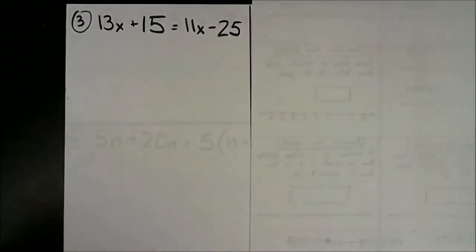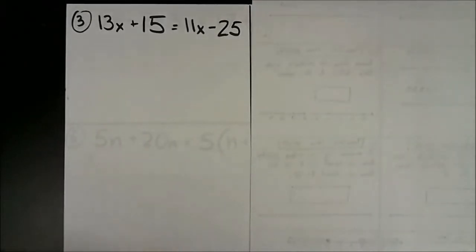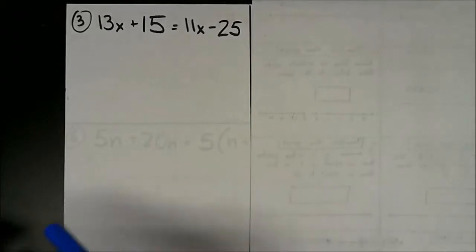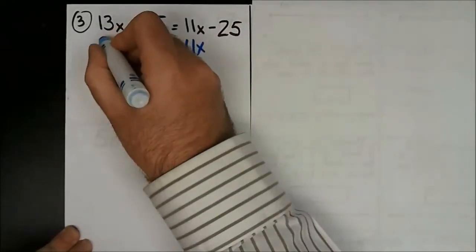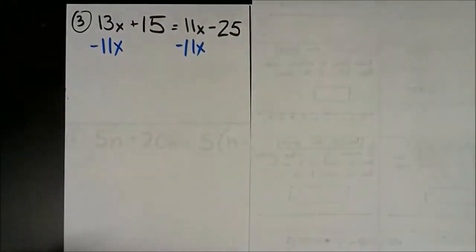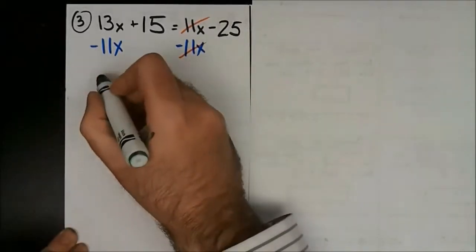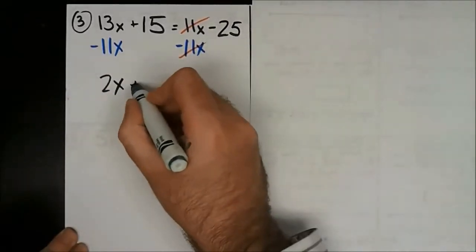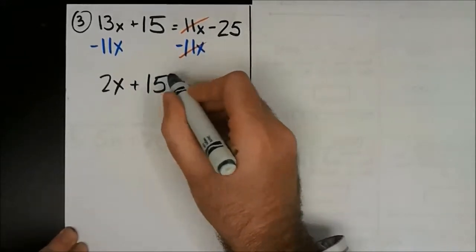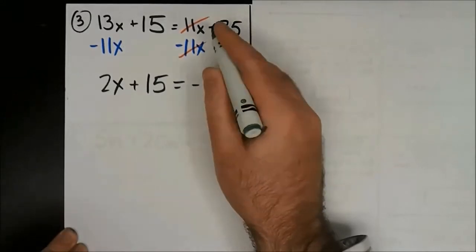Number 3 is pretty similar to number 2. I have 13x and 11x — I've got to get rid of one of the x terms. I choose the smaller one: 11 is smaller than 13, so I subtract 11x from both sides to get rid of the 11x on the right side. They cancel each other out. 13x minus 11x gets me 2x plus 15 equals negative 25. That minus stays.